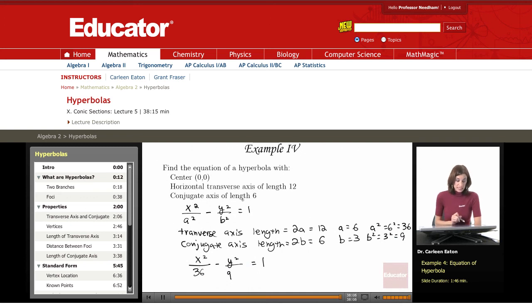and a conjugate axis with a length of 6. That concludes this lesson on hyperbolas. Thanks for visiting educator.com.